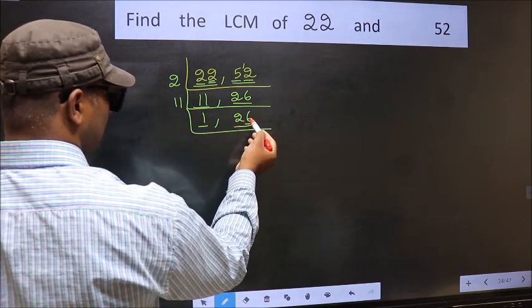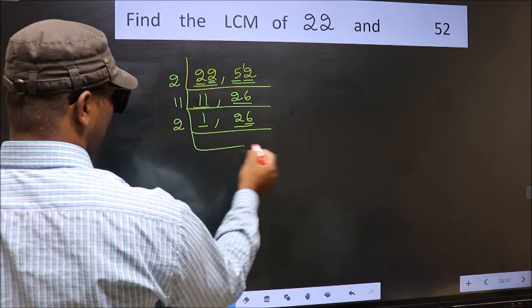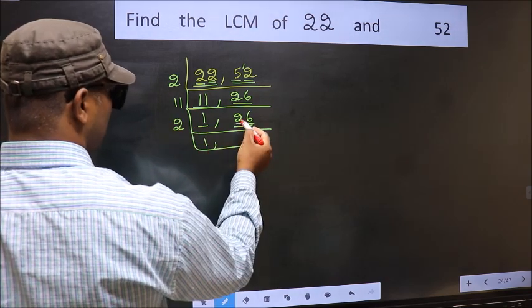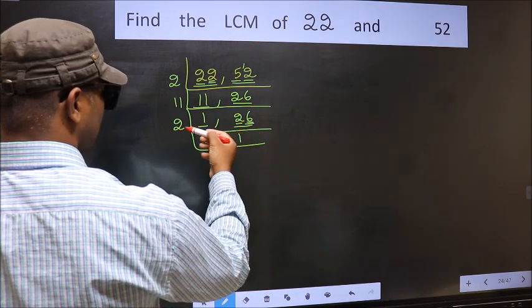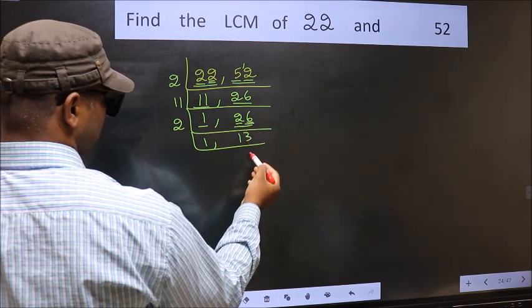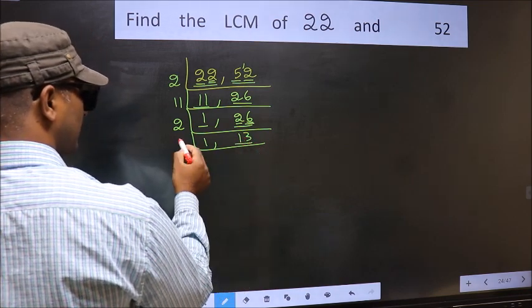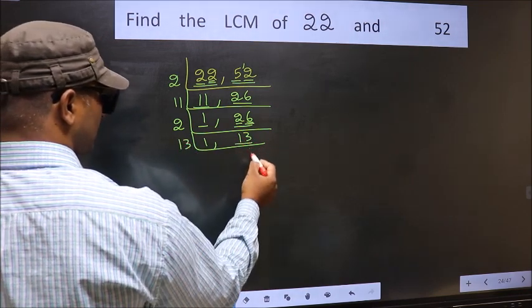Last digit is 6, so it's even, so take 2. First digit is 2, when do we get 2 in the 2 table? 2 times 1 is 2. The other digit is 6, when do we get 6 in the 2 table? 2 times 3 is 6. Now here we have 13. 13 is a prime number, so 13 times 1 is 13.